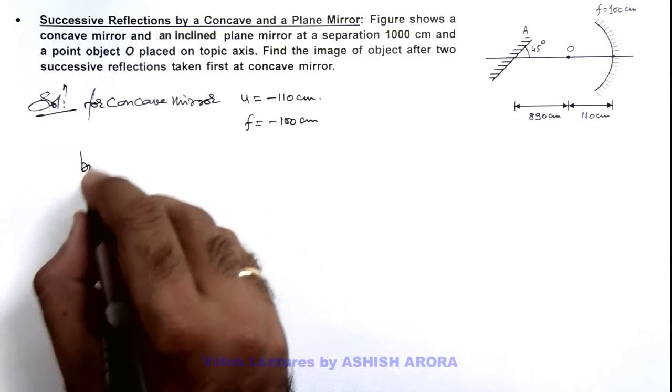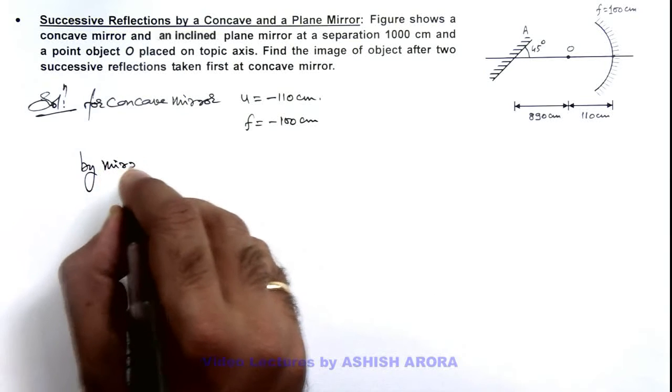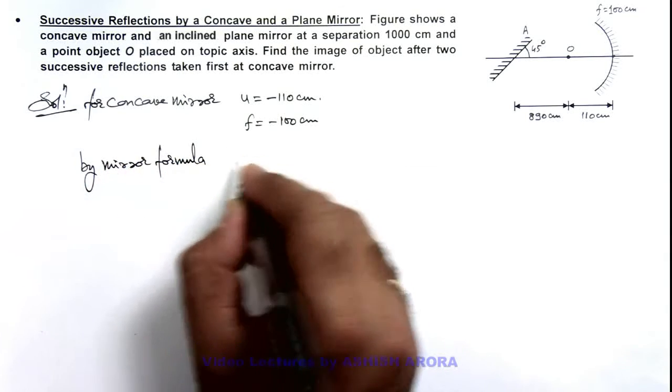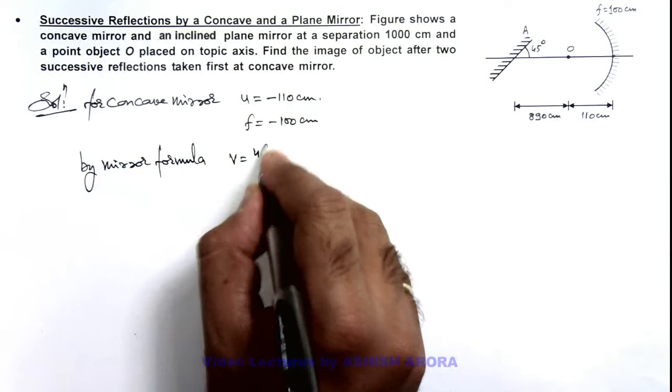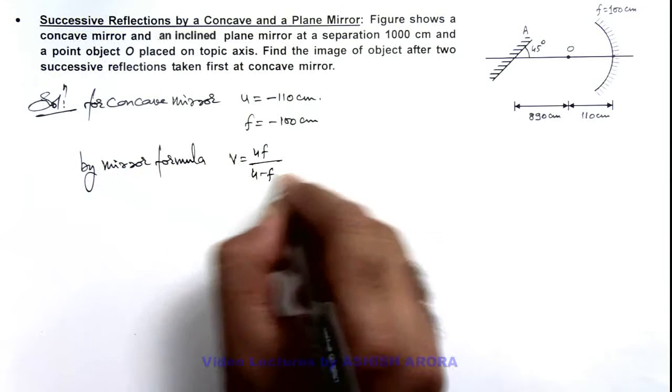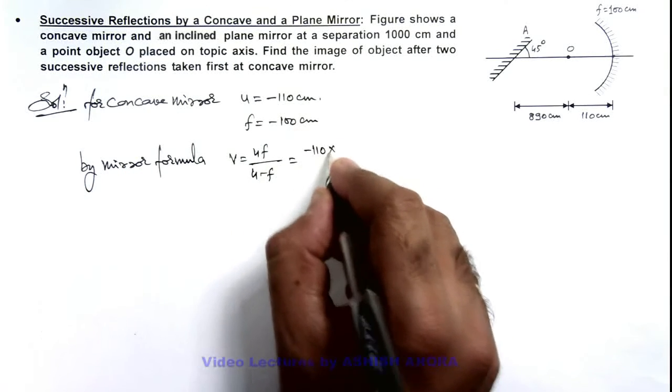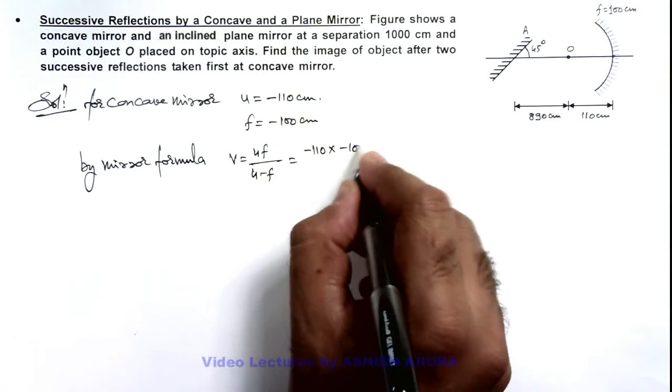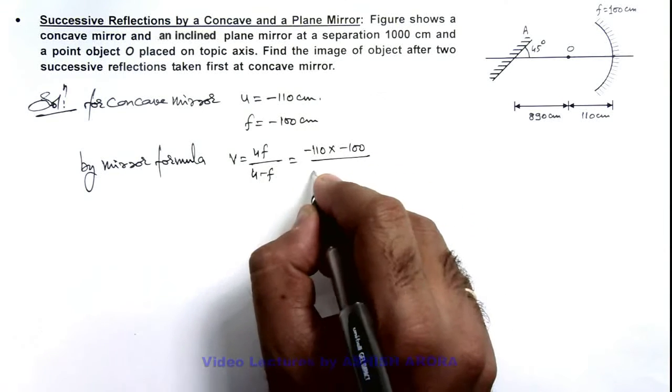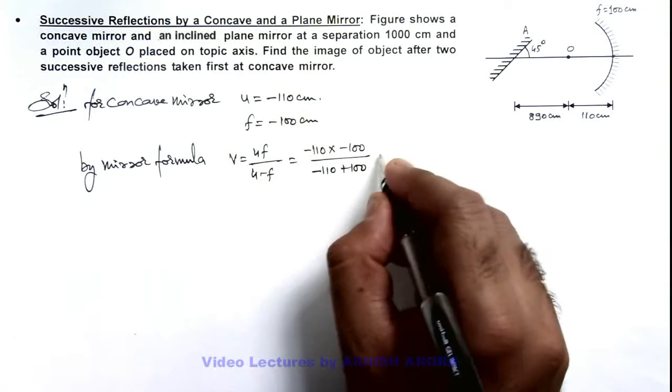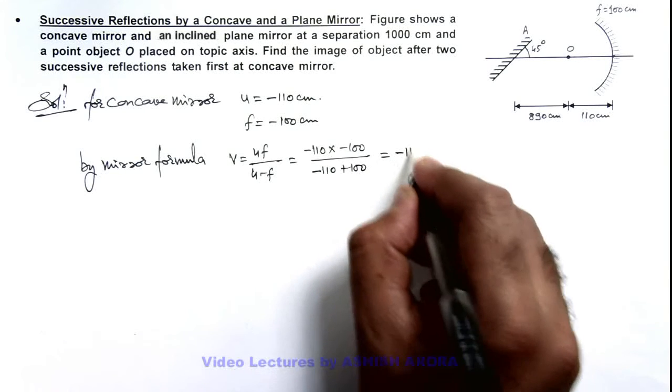We can write it by mirror formula. Value of v, the image distance is u f by u minus f, so on substituting the value of this minus hundred and ten into minus hundred divided by minus hundred and ten plus hundred, on simplifying we are getting the value is minus eleven hundred centimeter.